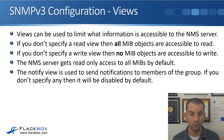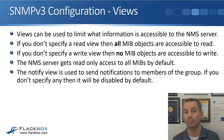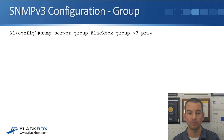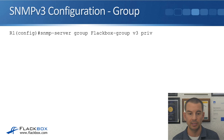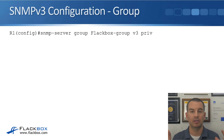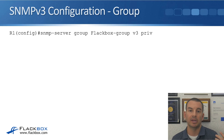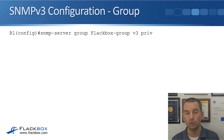The notify view is used to send notifications — traps — to members of the group. If you don't specify any, it will be disabled by default. In this example, the full command used is 'snmp-server group flatbox-group v3 priv' with no access list or views configured. Using the defaults means the NMS server in this group will have full read-only access to the device.